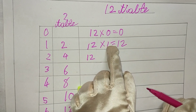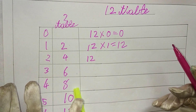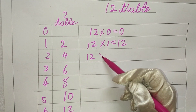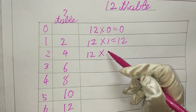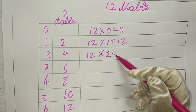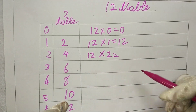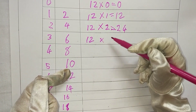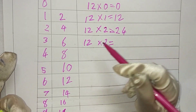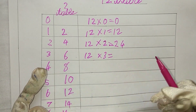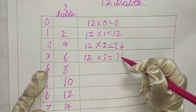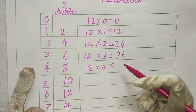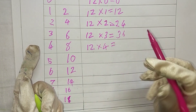For 0 times any number, the answer is 0. For 1 it's the same number. Now I'll join them together — 12 into 2: I'm joining 2 and 4 and making it 24. Now 12 into 3: joining 6 and 3 and making 36. 12 into 4: I'm joining 8 and 4 to make 48.